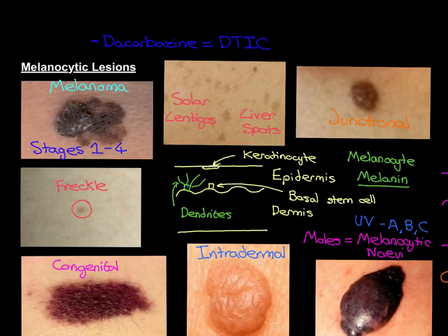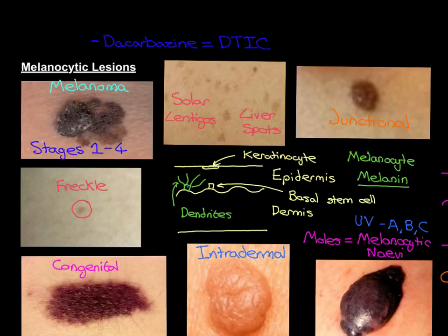Classical chemotherapeutic agents all work in broadly the same way: they kill cells that are dividing rapidly. They don't kill all cells — they kill cells that are dividing rapidly, and that's how they kill cancer, because cancer is a tumour of very rapidly dividing cells. So Dacarbazine is a classical chemotherapeutic agent that is going to kill rapidly dividing cells.